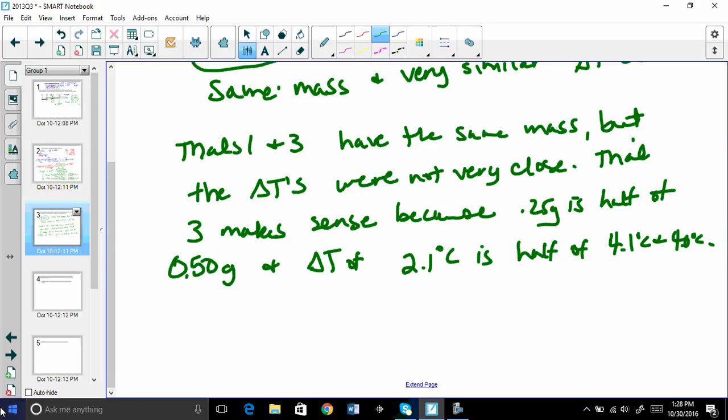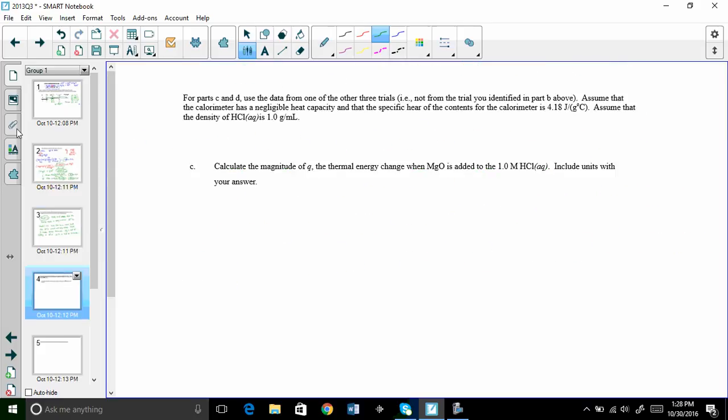Trials 2 and 4 had the same mass and very similar delta T's. So trial 1 is the answer. This is the explanation: Trials 1 and 3 have the same mass but the delta T's were not very close. Trial 3 makes sense because 0.25 grams is half of 0.5 grams, and delta T of 2.1 is half of 4.1 and 4.0. Now going to the next slide.